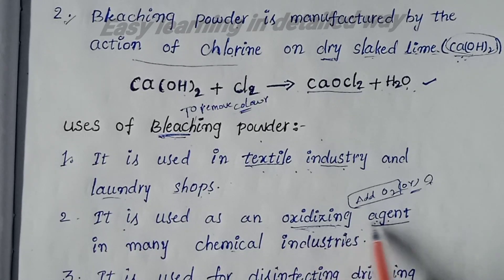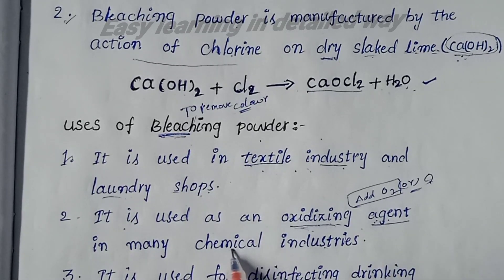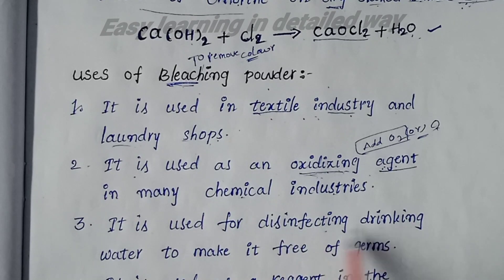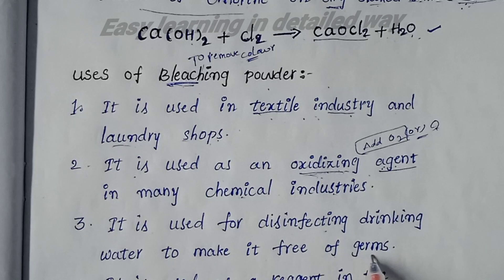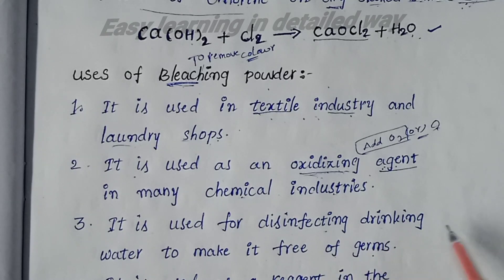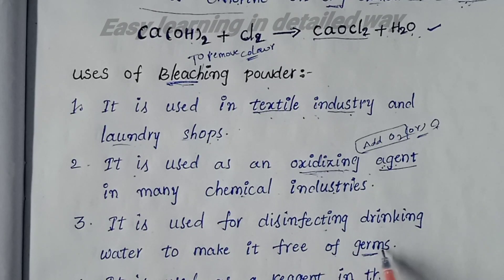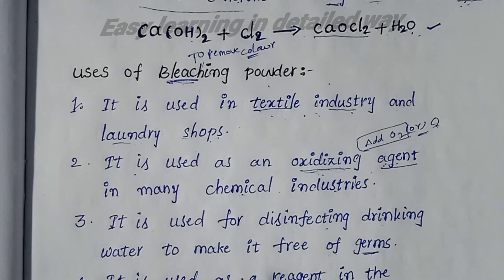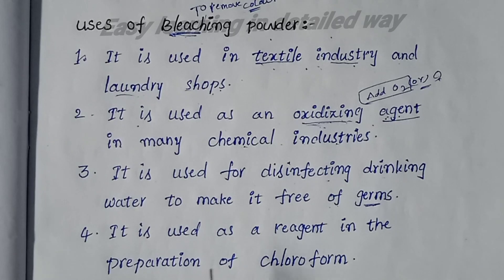The third use: bleaching powder is used for disinfecting drinking water to make it free of germs. This is the third use of bleaching powder.